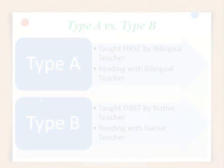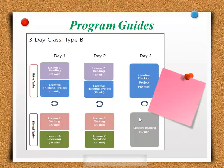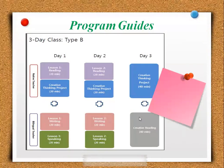The reason why we went over the difference between type A versus type B is because when we look at the program guides, you'll notice that they are labeled type A or type B. In order to use them effectively, you need to know what your class is labeled. All the information we've gone over thus far is actually included in the program guides, so you need to know all that information to use it effectively.